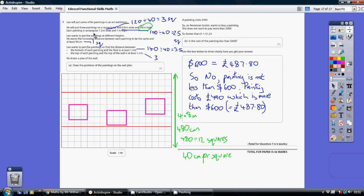So we're told that each painting is 1.2 metres wide by 1.1 metre high. So that's 120 centimetres wide and 100 centimetres high. So dividing each of those by 40, we can see that each of the paintings needs to be 3 squares wide and 2.5 squares high.